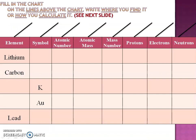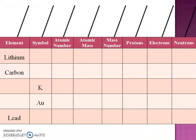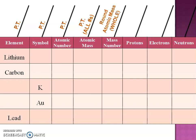Let's look at this chart. The element name and symbol come right from the periodic table. Atomic number — periodic table. Atomic mass — periodic table. For the atomic mass, write all the numbers shown on the periodic table. The mass number is rounding that atomic mass to a whole number. Protons and electrons both equal the atomic number. To figure out the neutrons, take the mass number minus the atomic number — it has to be the mass number because that's the one rounded to a whole number.